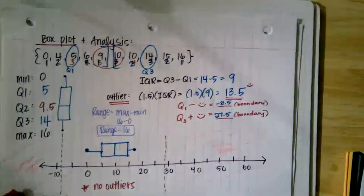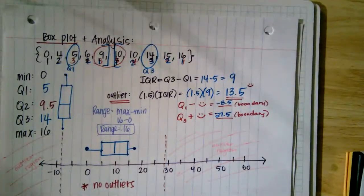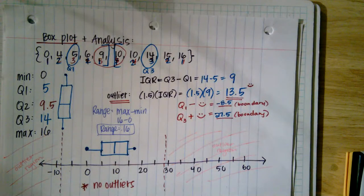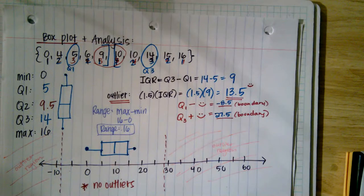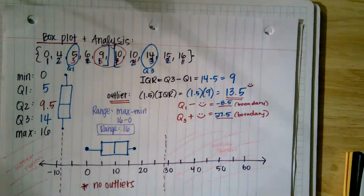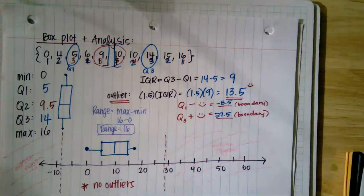So to recap: we analyzed mean, median, and mode — measures of central tendency. We also analyzed variance and standard deviation, which look at the average distance a data point is from the mean. And we looked at box plots and their quartile-based analysis. Hope you enjoy — see you guys later.